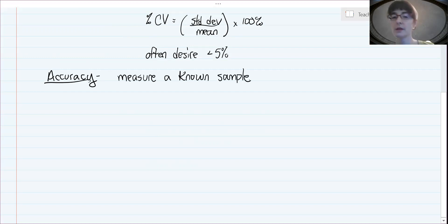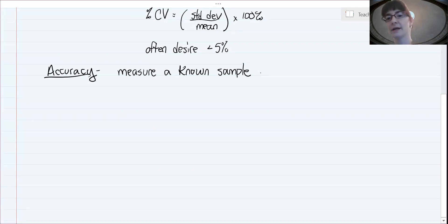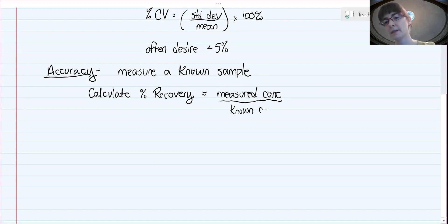The easiest way to quantify this is you would measure a known sample, meaning that we know its concentration. It has a known concentration, say 5 milligrams per mil or 5 micromolar, something like that. Then we can calculate, there's a number of different ways to calculate accuracy. One way is to calculate something called the percent recovery, and that is just defined as the measured concentration, like what you got back, divided by the known concentration or what you expected to get. So this is very simple.